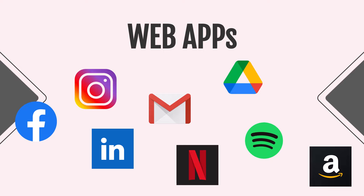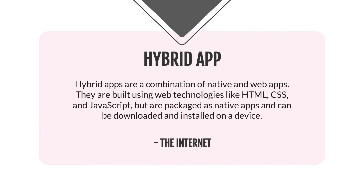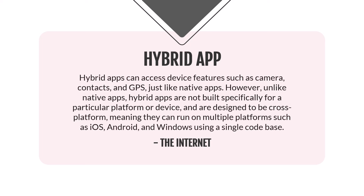Now let's move on to hybrid apps. Hybrid apps are a combination of native and web apps. They are built using web technologies like HTML, CSS, and JavaScript, but are packaged as native apps and can be downloaded and installed on a device. Hybrid apps can access device features such as cameras, contacts, and GPS. Unlike native apps, they are not built specifically for a particular platform — they are designed to be cross-platform, meaning they can run on multiple platforms such as iOS, Android, and Windows using a single code base.